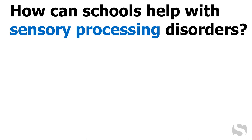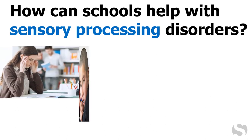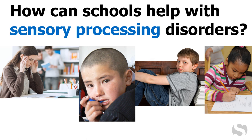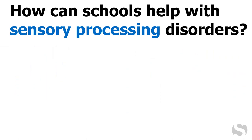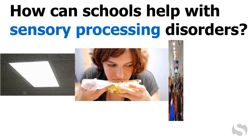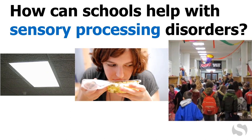How can schools help with sensory processing disorders? Knowing the type and nature of a student's disorder is critical, because the needs of someone with over-responsive sensory modulation, for example, will be different than those of a sensory seeker or someone with poor sensory discrimination or apraxia. Educators should be aware of the sensory demands being placed on students, including lighting and odors, and give kids a heads up when sensory overload is coming, such as during chaotic and loud transitions between classes.